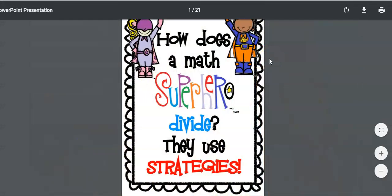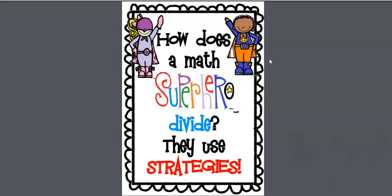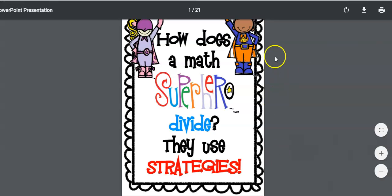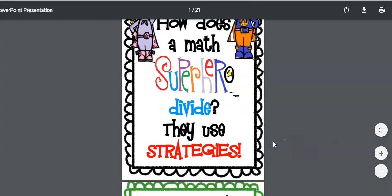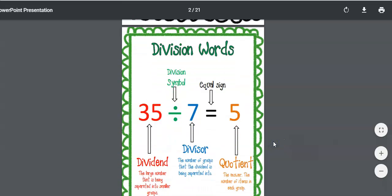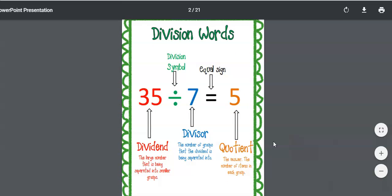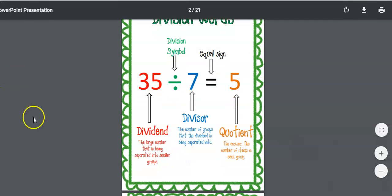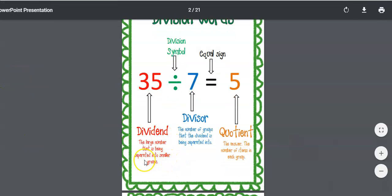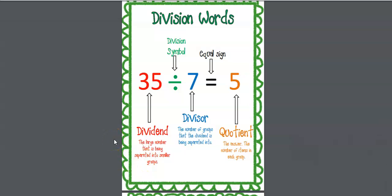So how does a math superhero divide? They use strategies. Let's see what some of those strategies might be. First, we're going to talk about those division words. Dividend is the large number that is being separated into smaller groups. So the dividend is the bigger number that is being separated into smaller groups.